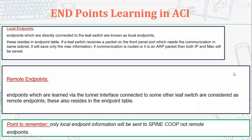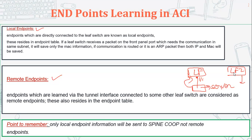There are two types of endpoints: local endpoints and remote endpoints. Local endpoints are endpoints directly connected to our leaf switch. For example, if a server is connected to port 1/1 of a leaf switch, its IP and MAC address will be considered local endpoints for that leaf. If there is another leaf (Leaf 2) with another server, and Leaf 1 learns about that server via the fabric through the spine, that server will be considered a remote endpoint for Leaf 1.